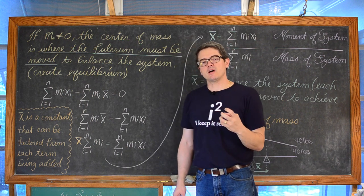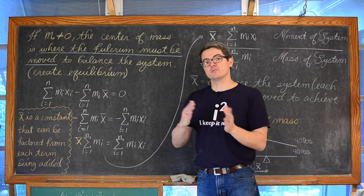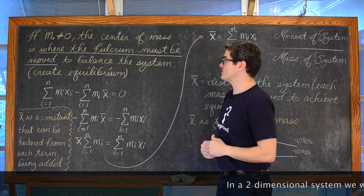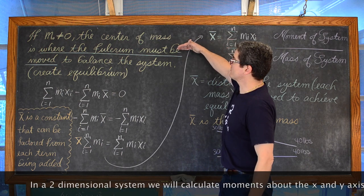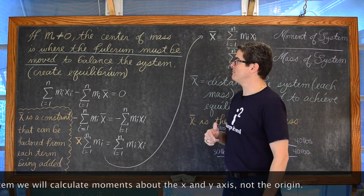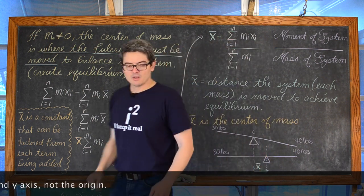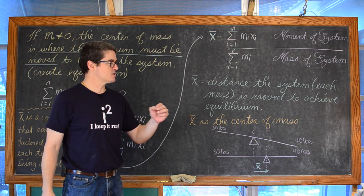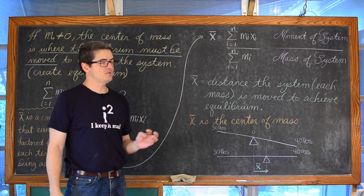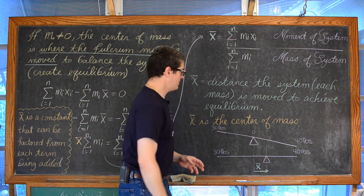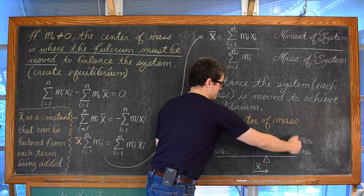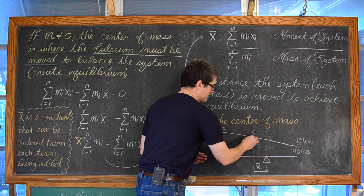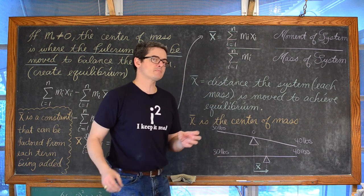I said that all those x sub i values were the distance that each of those point masses are away from zero on the number line, or the origin if it's a two-dimensional system. And the center of mass is where the fulcrum must be moved to balance the system. X-bar is the distance each individual mass needs to be moved to achieve equilibrium. In my teeter-totter example, I have my two kids at particular values, the fulcrum at zero on the number line, and the fulcrum would have to get moved a distance of x-bar units.